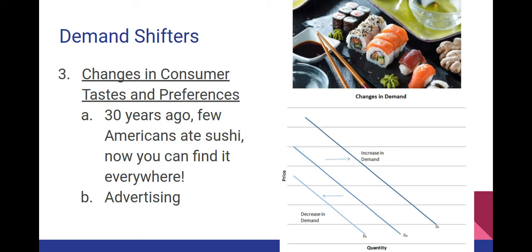Changes in consumer tastes and preferences have a lot to do with demand shifting because fads change constantly. When I was in high school, low-waisted almost bell-bottom-like jeans were the thing. By the time you were in middle school or early high school, skinny jeans were all the rage, and now it's flowing back toward the bell-bottom-looking type of jeans. People change what they like based on what their friends, family, and celebrities are doing, so it causes a change in demand for different products.